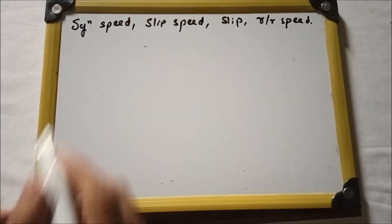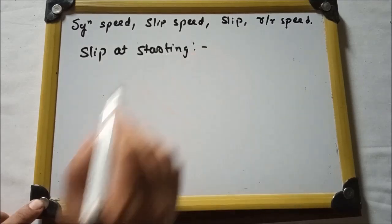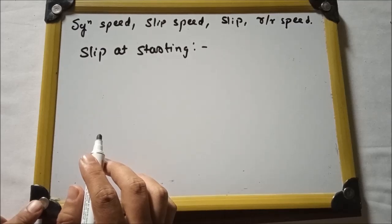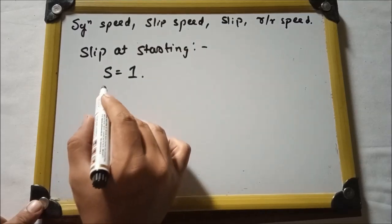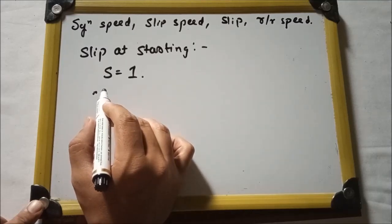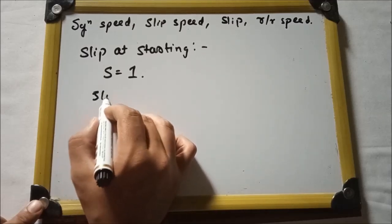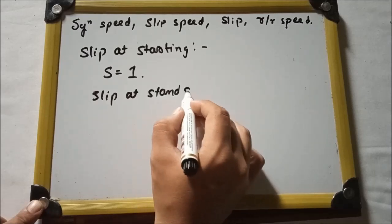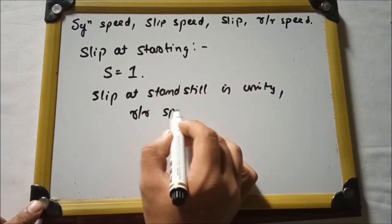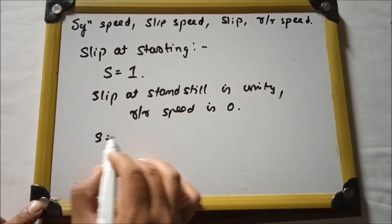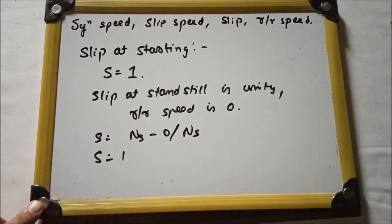What is slip at starting? Slip at starting means s = 1. This means that slip at standstill condition is unity because the rotor speed at starting time is 0. Since rotor speed is 0, we get (ns − 0) / ns = 1.